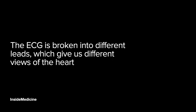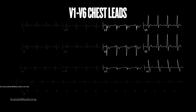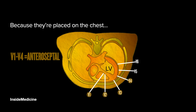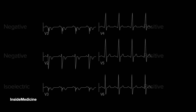The ECG is broken down into different leads, which give us different views of the heart. This is a standard 12-lead ECG. V1 to V6 are your chest leads — they're placed on the chest. V1 to V4 are looking at the anterior portion of the heart and the interventricular septum, which is why they're called the antero-septal leads. V5 and V6 are looking at the left ventricle, specifically the lateral wall, so we call these the lateral leads. The left ventricle is larger, and therefore that is the direction in which the net charge moves — away from V1 and towards V6 — so the deflections go from negative to positive.